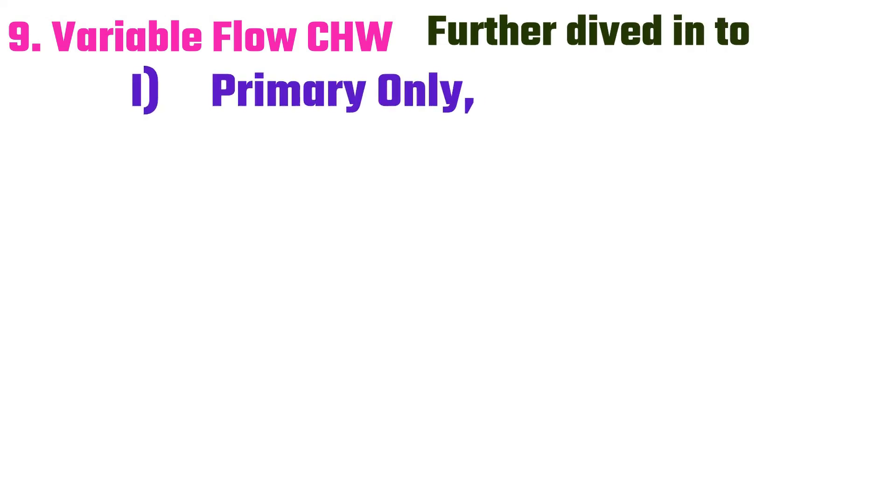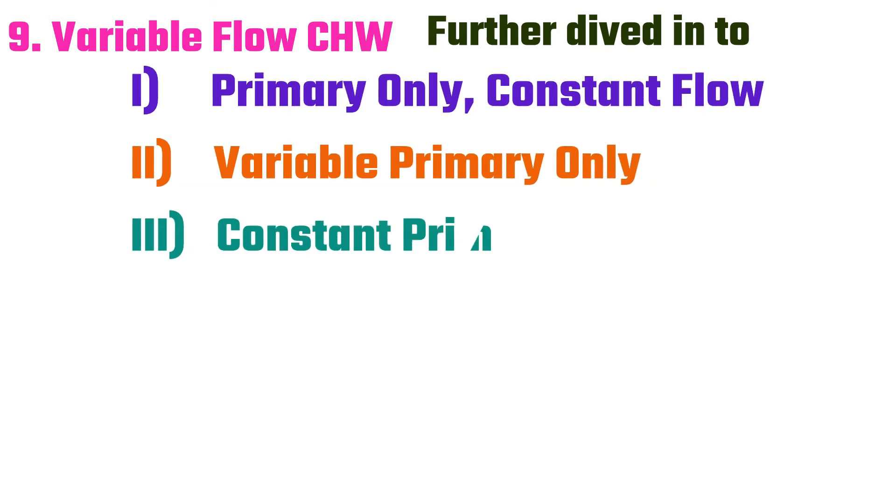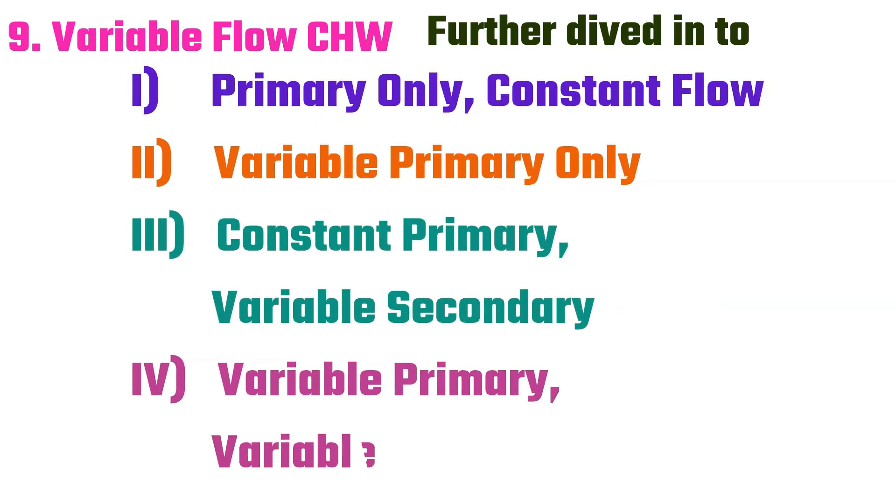Ninth, variable flow chilled water systems are further divided into: one, primary only constant flow; two, variable primary only systems; three, constant primary and variable secondary system; four, variable primary and variable secondary system.